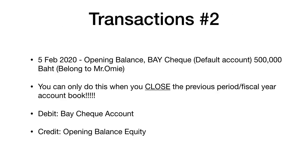That was transaction number one. Transaction number two is about opening balance. When using the ERP system, most of the time you have a previous system — maybe a book or some other software. Opening balance means you continue your books, either because you changed systems or closed the previous book. Make sure you close the previous fiscal year first; if you haven't closed it, the money amounts may change and you'll need to redo everything.